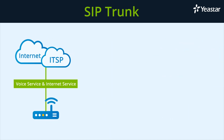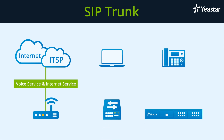If the internet service also goes through the same ethernet cable, connect the cable to the router directly. Since we have connected the PBX to the switch, the PBX will obtain both the voice service and internet service through this cable. At the same time, other devices connected to the router will be able to access the internet through the cable.